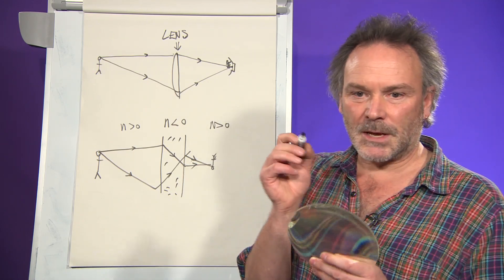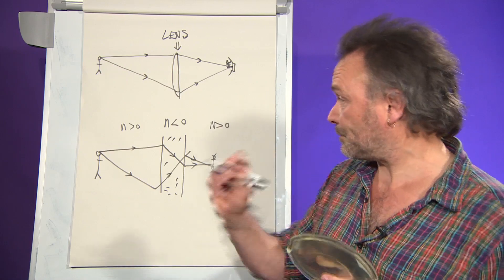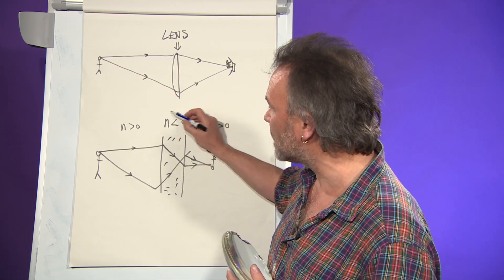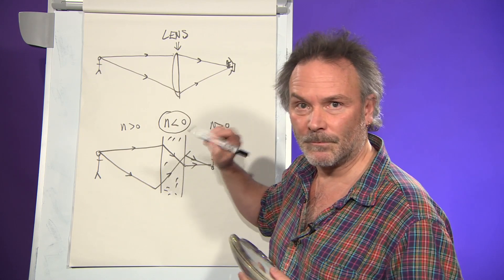What we're doing is making a new sort of lens, a perfect lens. Instead of using a material like glass, it uses one where the refractive index is actually negative.